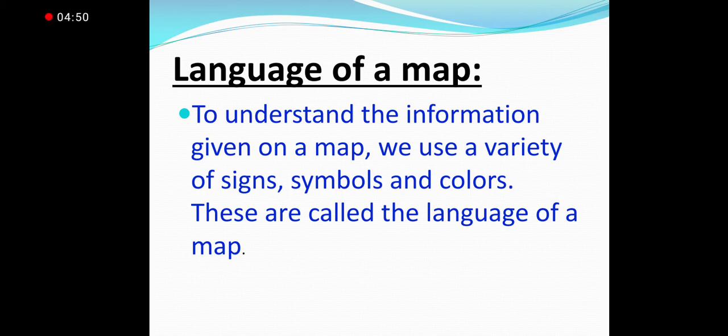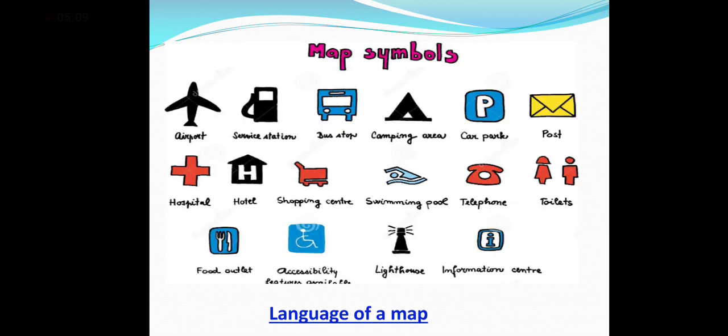Moving forward to the third point, we have language of a map. To understand the information given on a map, we use a variety of signs, symbols and colors. These are called the language of a map. In this map, we can see many signs and symbols. These all are helpful for us.